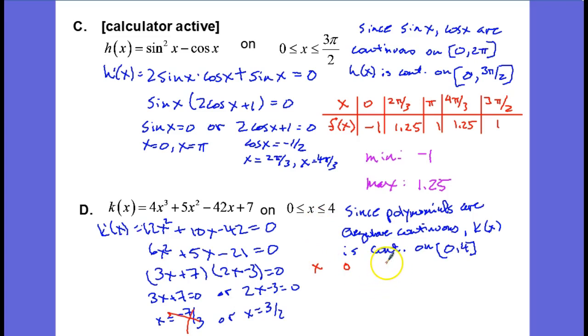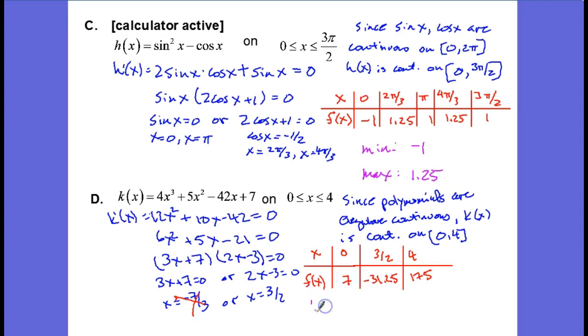And then we have 3 halves, and then finally the other endpoint on the right side, which is 4. Let's see what our f of x values are using the calculator. We get 7, we get negative 31.25, and we get 175. And so we can conclude that our absolute minimum is negative 31.25, and our absolute maximum is 175.